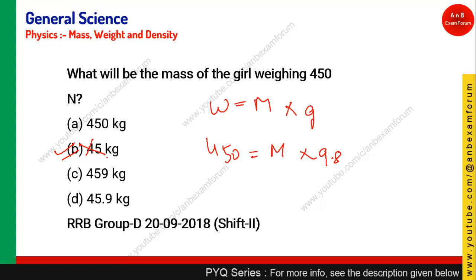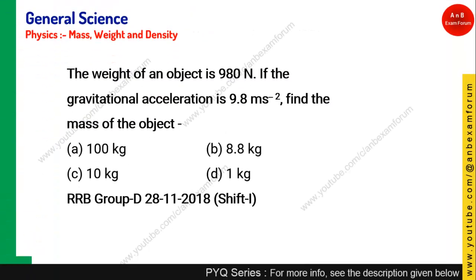When g is not specified, use 9.8. So mass = 450 ÷ 9.8 = 45.9 kg. The correct answer is option D — 45.9 kg.